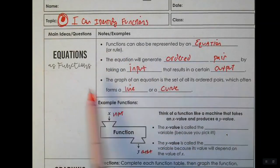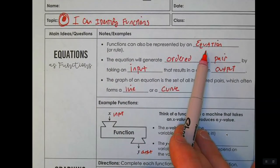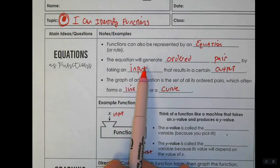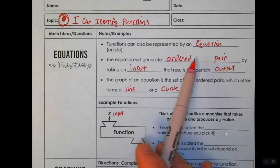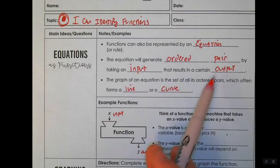We're going to talk about filling in the blanks. Functions can also be represented by an equation or sometimes a rule. The equation will generate an ordered pair which we know as a point. We talked about taking an input that results in a certain output.